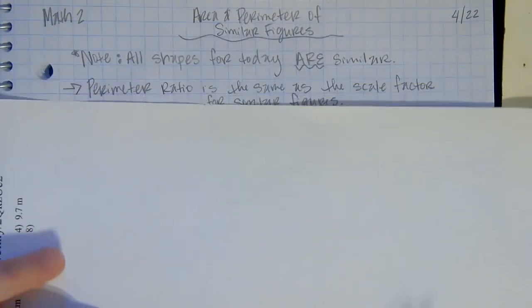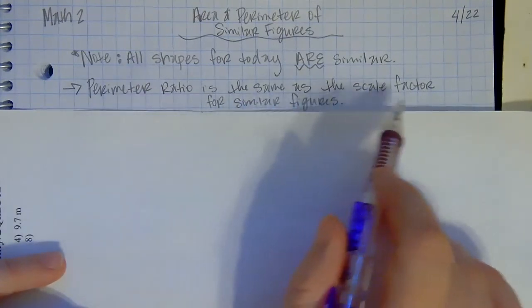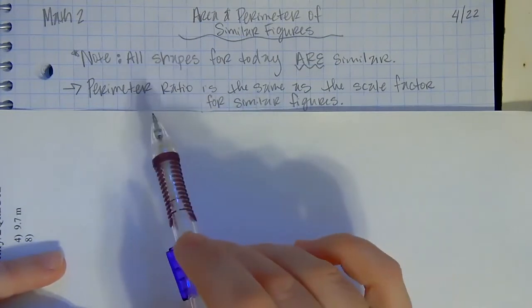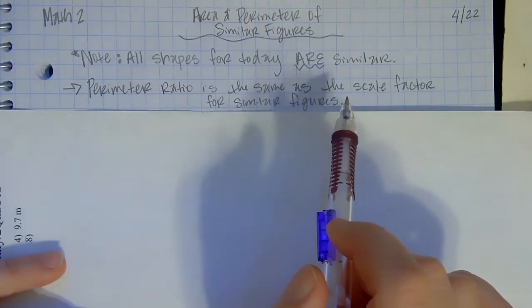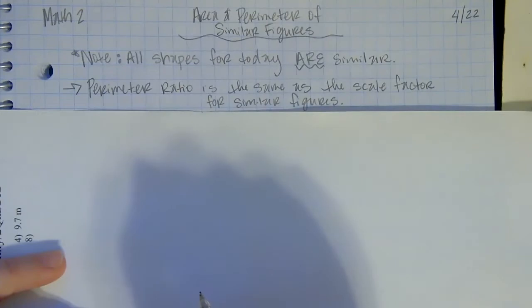For perimeter, the perimeter ratio is actually exactly the same as the scale factor for similar figures. So for example, if the length of one of the sides is twice as big as the length of the other shape, then that means the perimeter is going to be twice as big as well.